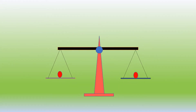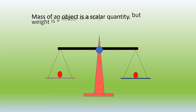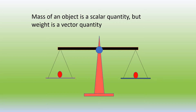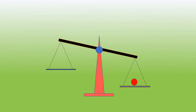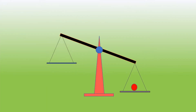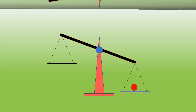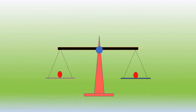Have you ever thought how it is that mass is a scalar quantity but weight is a vector quantity? Let us see an example when we weigh an object. Mass has no direction, but weight does — it is directed downwards. Remember that weight is just a force measured in Newtons.